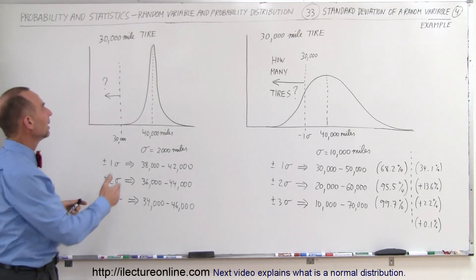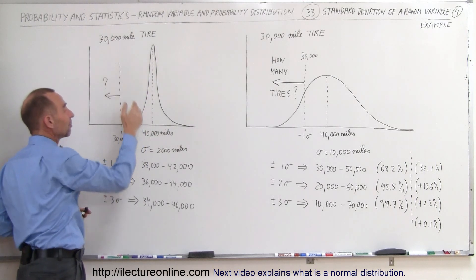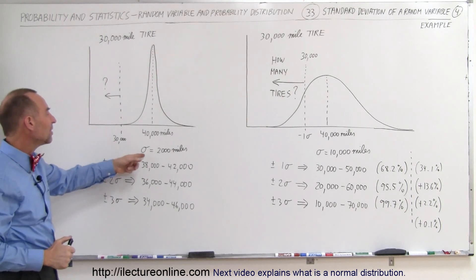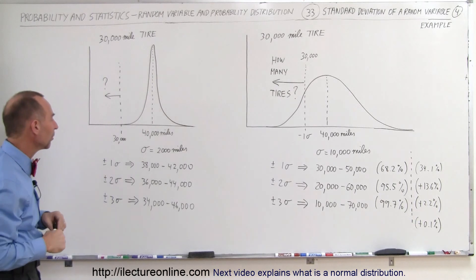This particular company, you can see that the average mileage you get out of a tire, even though it's rated 30,000 miles, the average mileage a person will get from the tire is 40,000 miles. And the standard deviation is equal to 2,000 miles. I just made up the numbers to show you how we use these numbers.